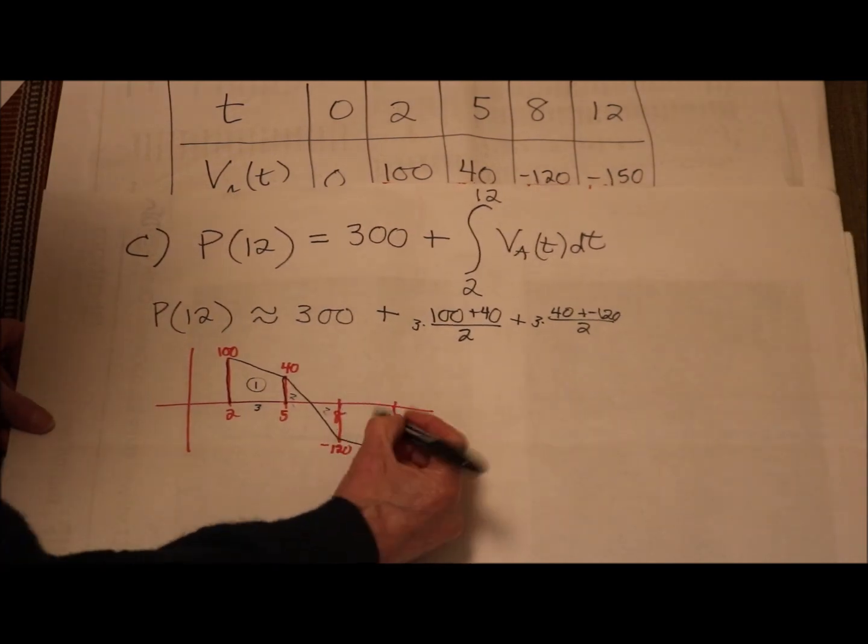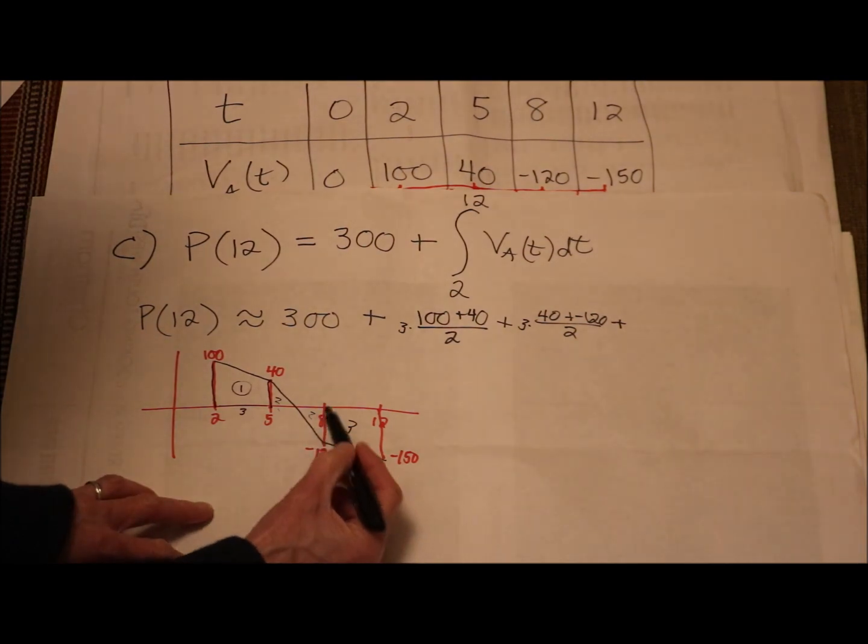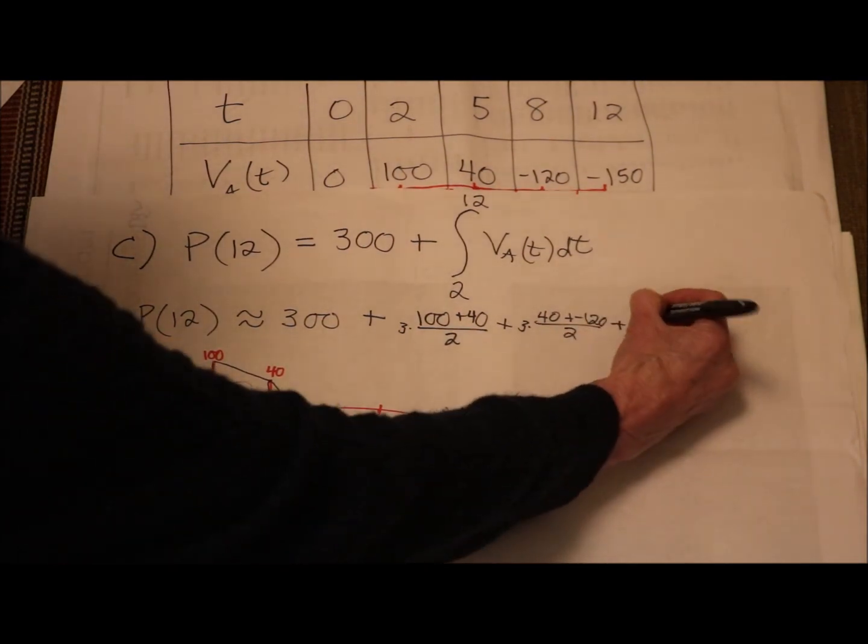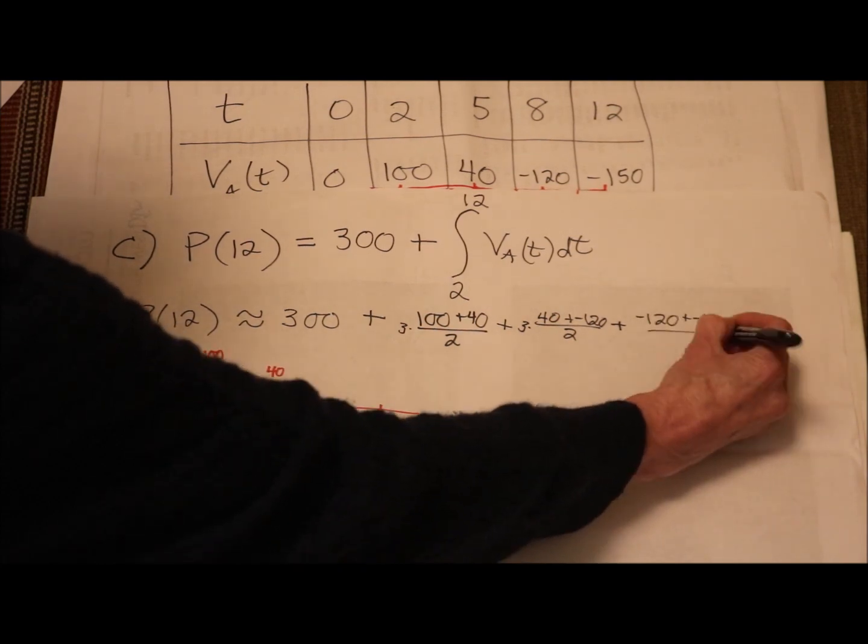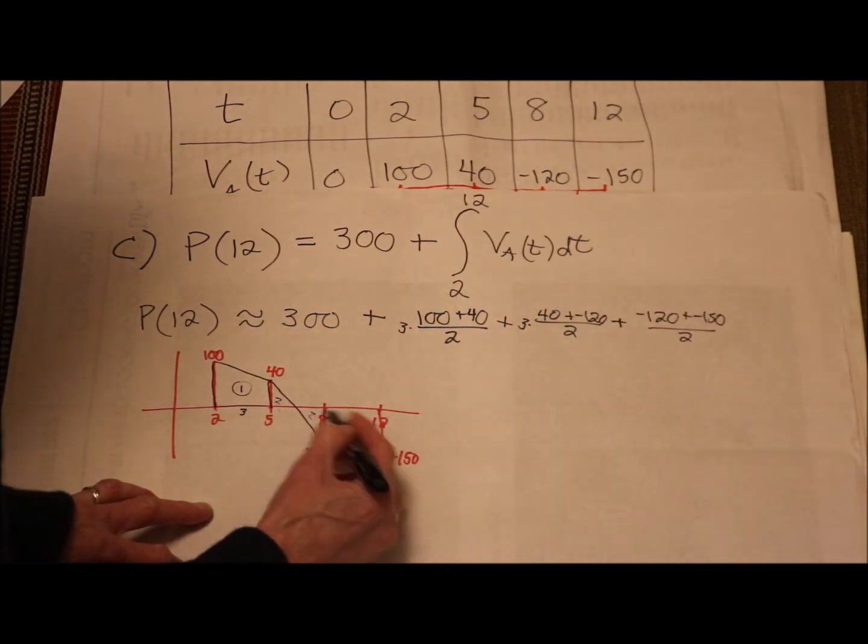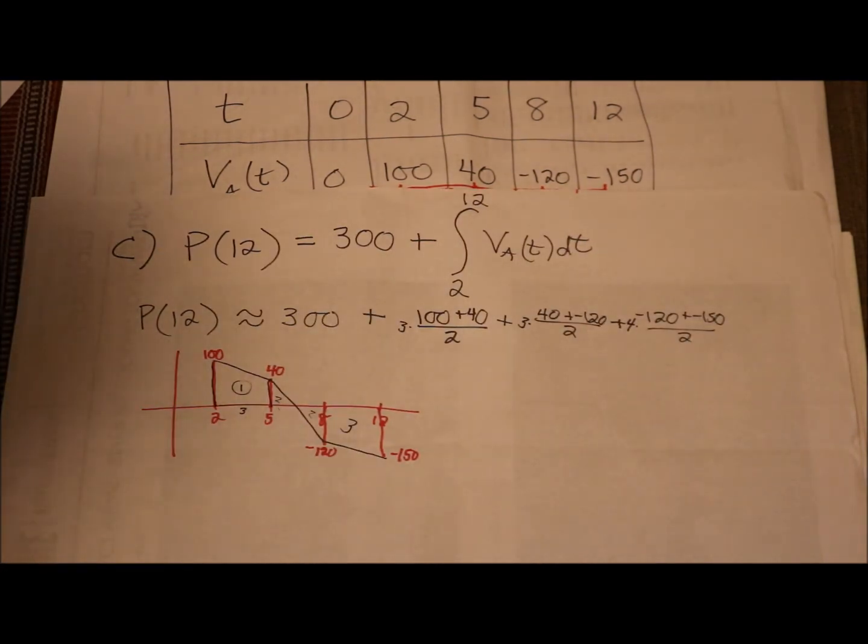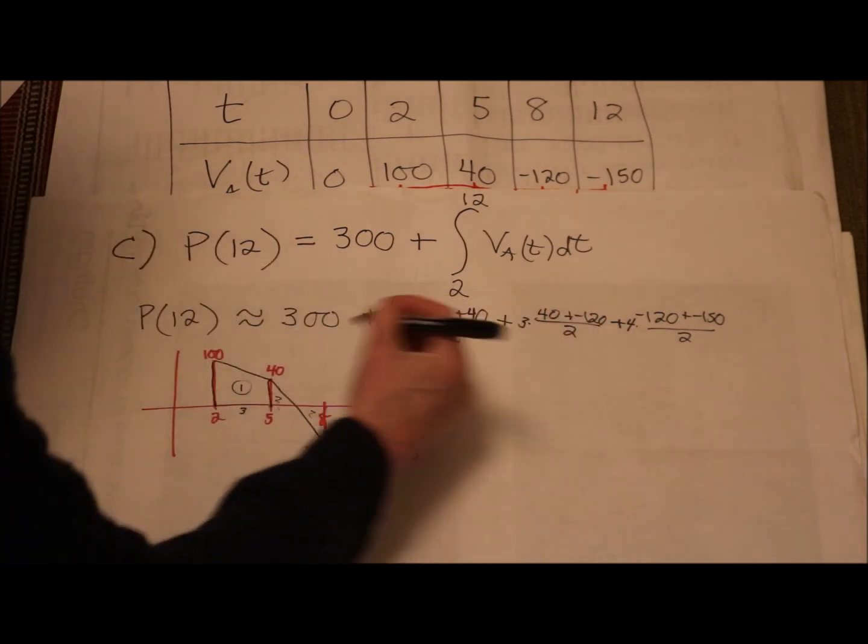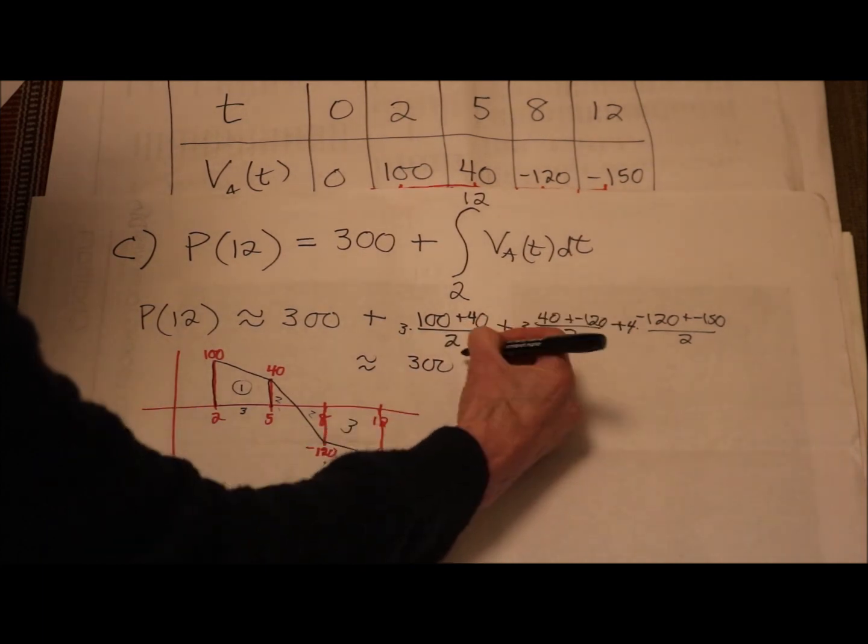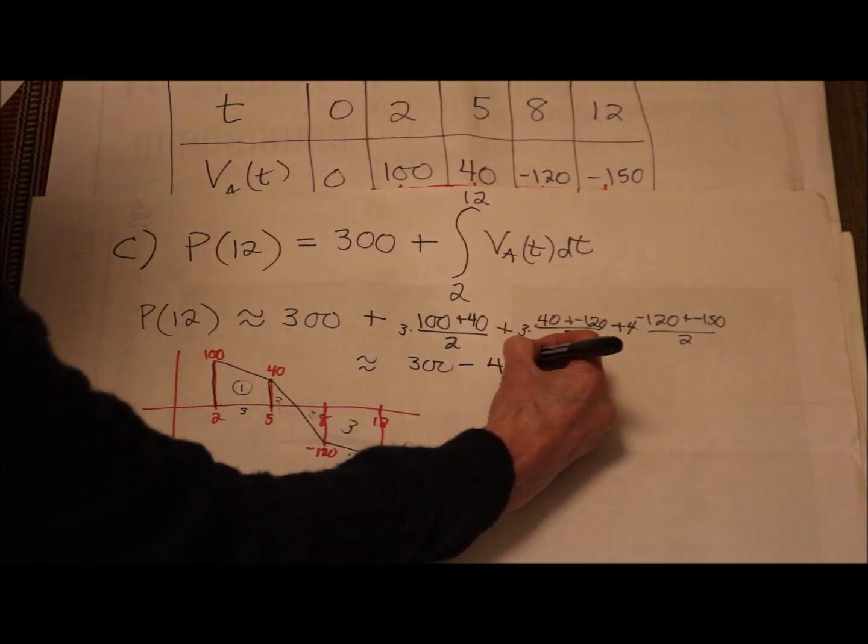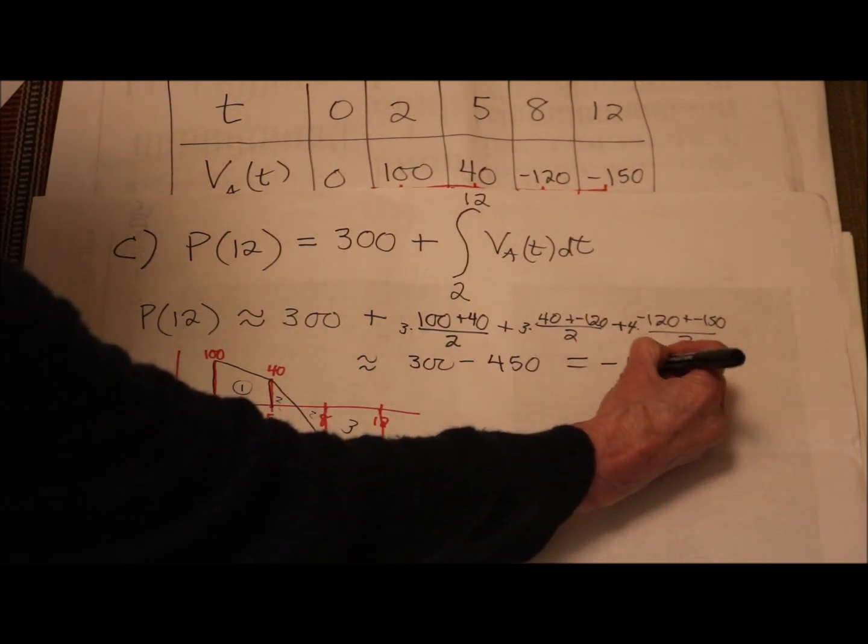And then my third trapezoid, which is really a more satisfying trapezoid, is my base is, one base is 120. The other base is negative 150. Average of the bases times the difference, 8, 9, 10, 11, 12. So that's times 4. All right. So you throw that in a calculator. You have 300. All of those end up, I think, giving you a minus 450. And that gives you negative 150.